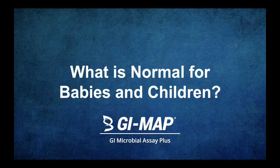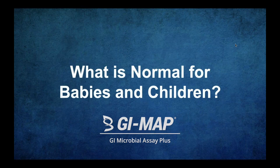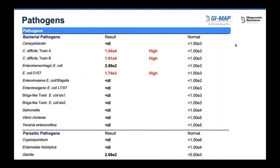Moving on to what is normal. We're going to go through the different sections of the GI map and talk about what we're expecting for babies — what we're not expecting, and what might sometimes come back that could be normal. Starting with the pathogens, because GI map starts with page one as the pathogen page. For instance, a four-year-old with eczema may come up with five pathogens present, three out of range. The most normal finding in most children is no pathogens.